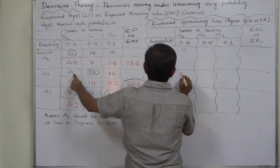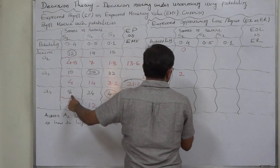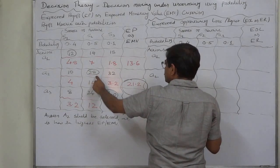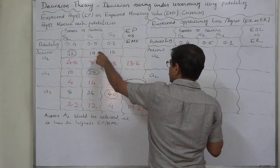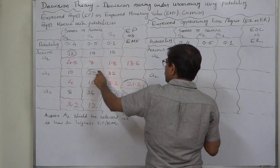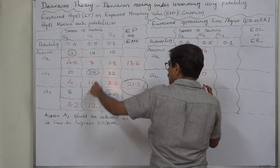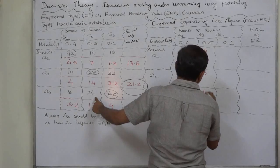In case of s2, highest is 28. Let's subtract all from it: 28 minus 14 will be 14; 28 minus 28 will be 0; 28 minus 24 will be 4. In case of s3, the highest is 40, so 40 minus 18 will be 22; 40 minus 32 will be 8; and 40 minus 40 will be 0.